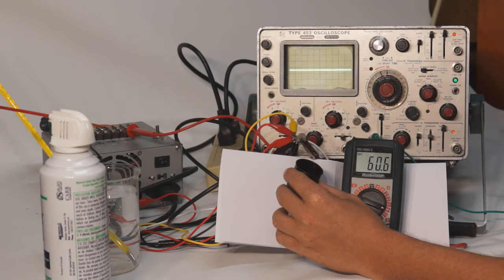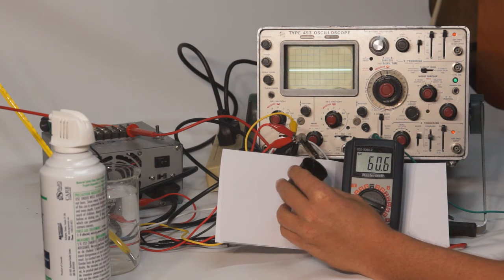Without doing any calculation, we already know that the resistance of the coil has dropped as it is allowing more current to flow and the voltage dropped across it has lowered.